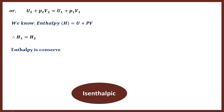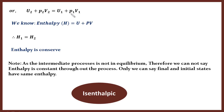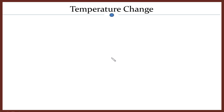We have assumed the whole transition happens quasi-statically, so we can use the laws of thermodynamics, but we are only sure about the initial and final states. Now we will learn how temperature changes with pressure. As discussed in the observations, drop in temperature is proportional to drop in pressure, so we will find the relation for that.